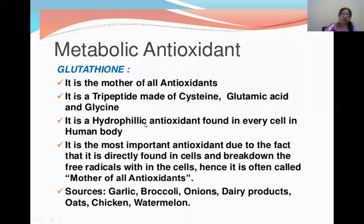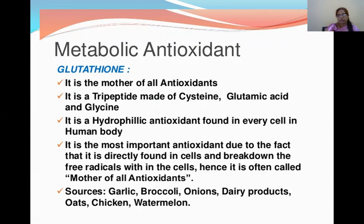Glutathione is a hydrophilic antioxidant found in every cell in the human body. The main sources of glutathione are garlic, broccoli, onion, dairy products, oats, chicken, and watermelon. It is also known as the mother of all antioxidants.